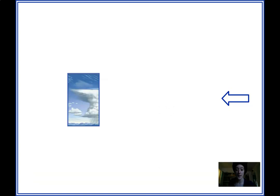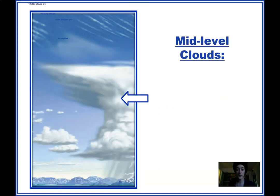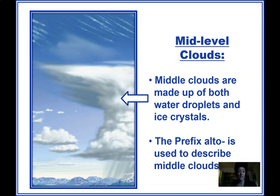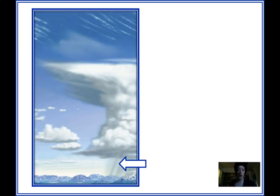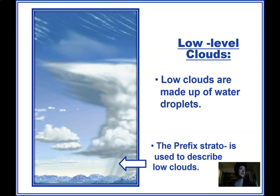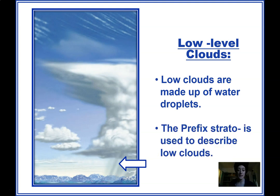Those are high clouds. Medium level clouds have the prefix alto, and they can be a combination of water droplets and ice crystals. We get all sorts of different shapes of clouds at this middle level, but usually they'll have that prefix alto at the beginning to tell you it's a medium level cloud. Then the low level clouds are the really interesting ones — they're the ones we see closest to our face.